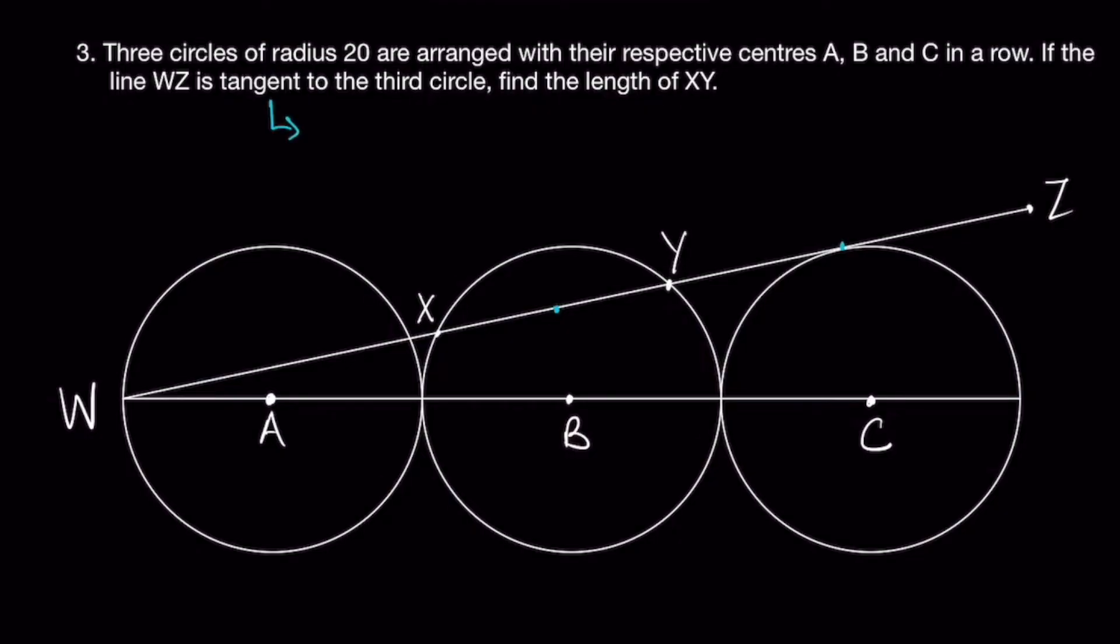Alright, first thing first, we have to know what is tangent. Tangent means that the line cuts the circle at a point. Okay, only one point. That means it's tangent to the circle.